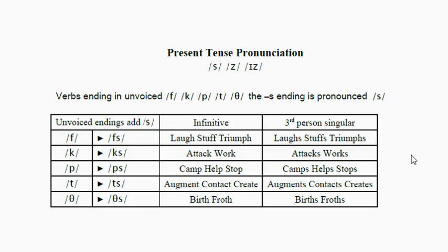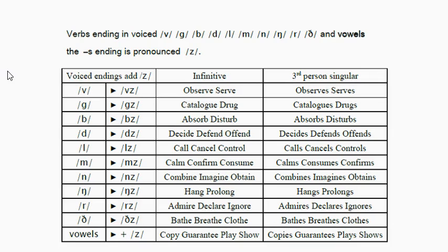Now this group is usually not a problem for most students learning English as a foreign language. The next group does cause a few more difficulties for students who want to work on the Z sound, because that sound may not be very frequent in their language, or there may be a tendency to turn a Z sound into an S sound at the end of verbs.